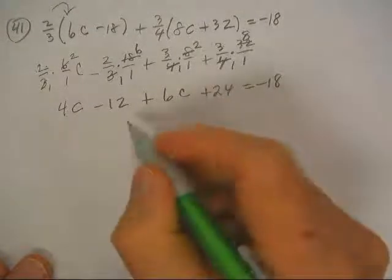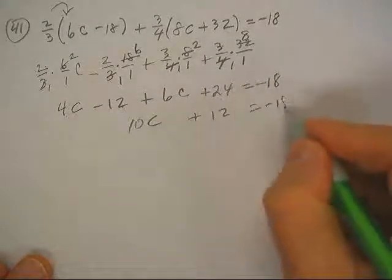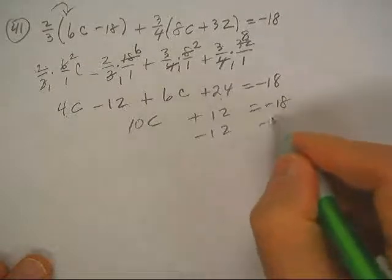And now we can rock and roll. That's 10C. 24 minus 12, that's 12. Let's subtract 12.